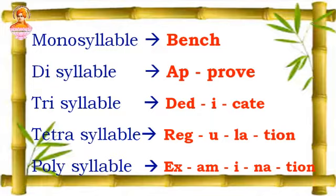Then, tetrasyllable. A word that has four syllables in it is a tetrasyllable word. Example: regulation — reg-u-la-tion. I can hear four vowel sounds while pronouncing this word. So it is a tetrasyllabic word.